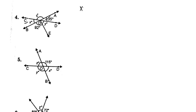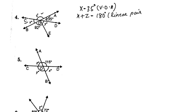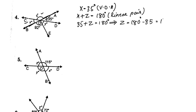So x is equal to 35 degrees — vertically opposite angles. X is 35 degrees. Z is easy: x plus z is equal to 180 degrees — linear pair. The straight line is 180 degrees. X is 35 degrees, so 35 plus z is equal to 180 degrees. Z is equal to 180 minus 35, which is equal to 145 degrees.